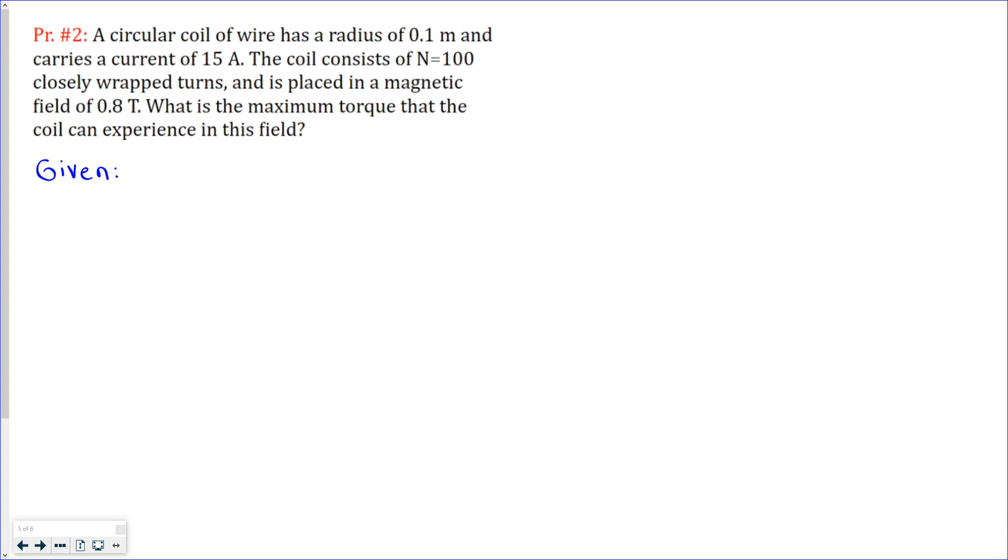Now we know the radius of this circular loop is 0.1 meters and it carries a current of 15 amperes, and the coil consists of 100 turns.